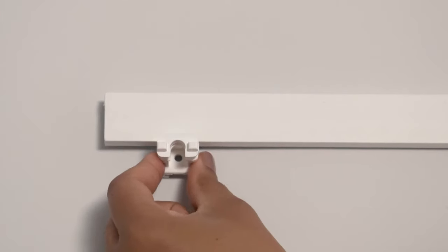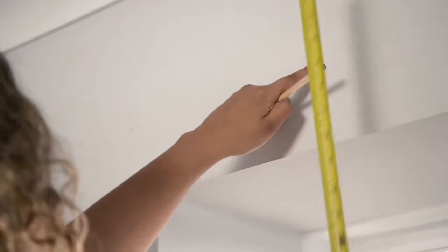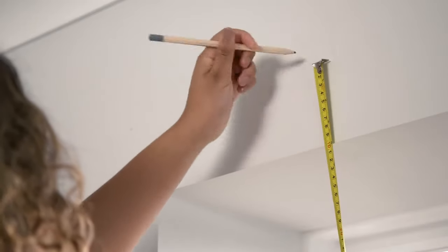Next we need to work out the equal distribution of the brackets. Take that measurement and mark 10 centimeters up from the top of the recess, checking it's level as you go along.